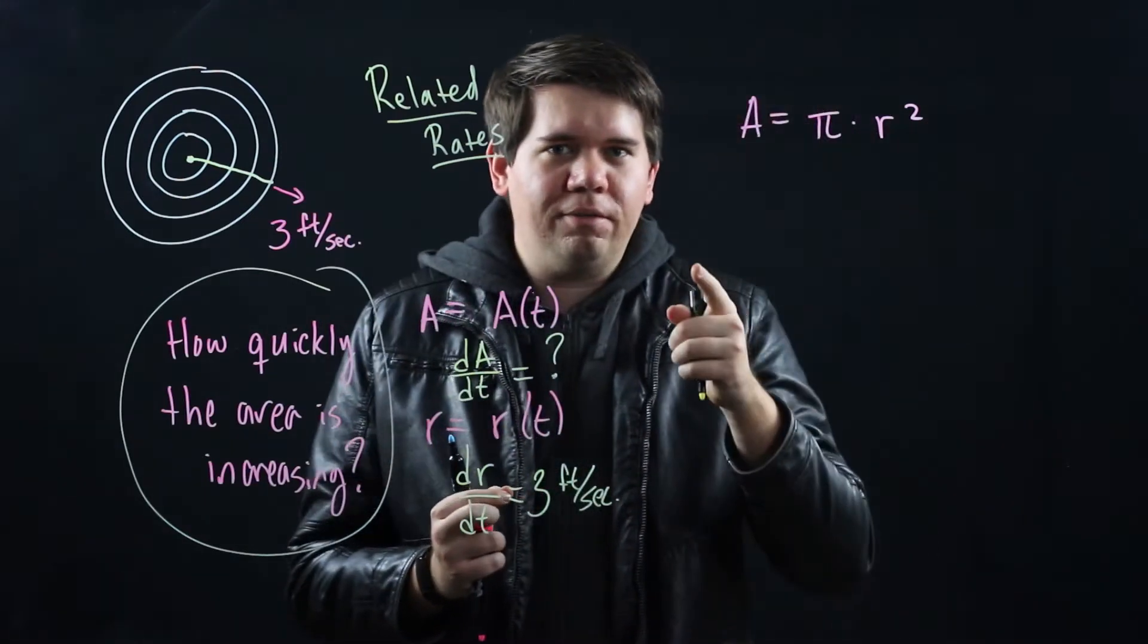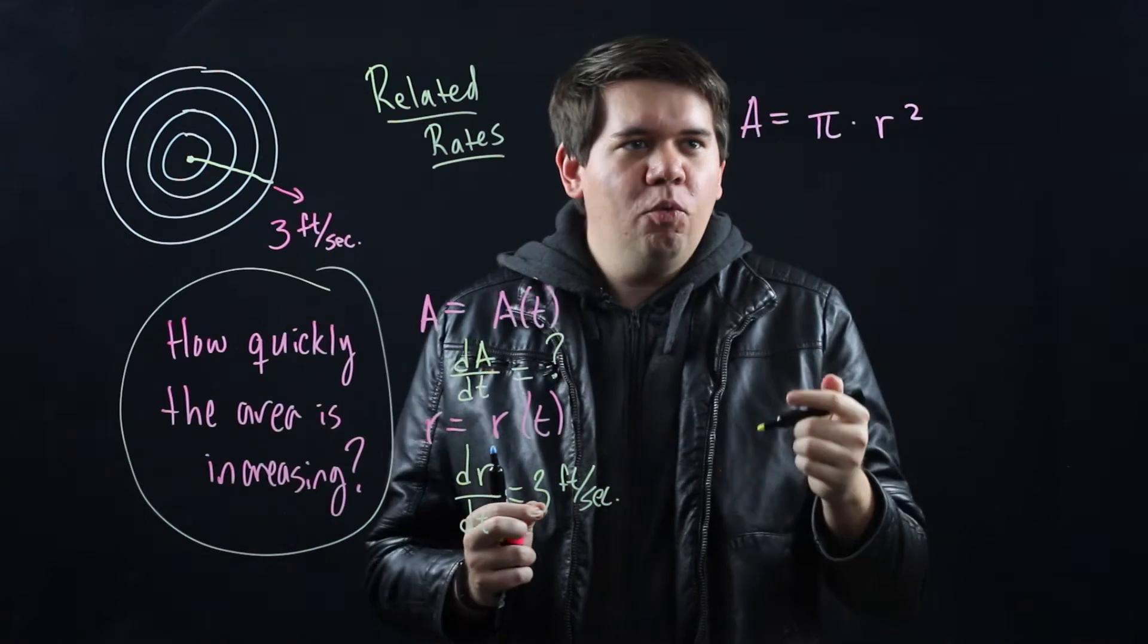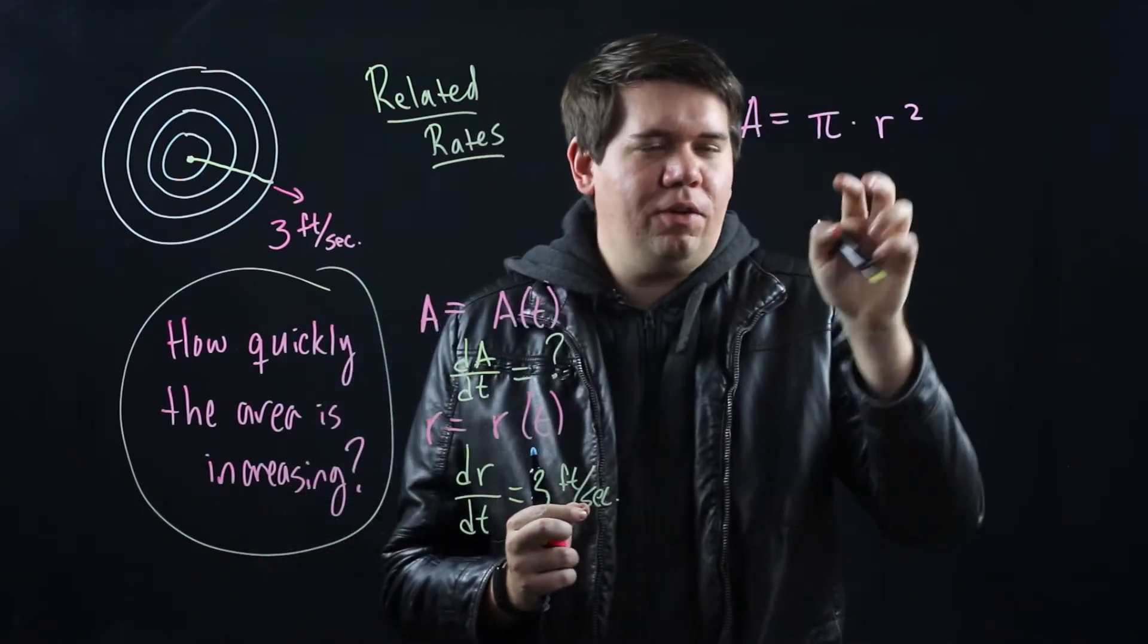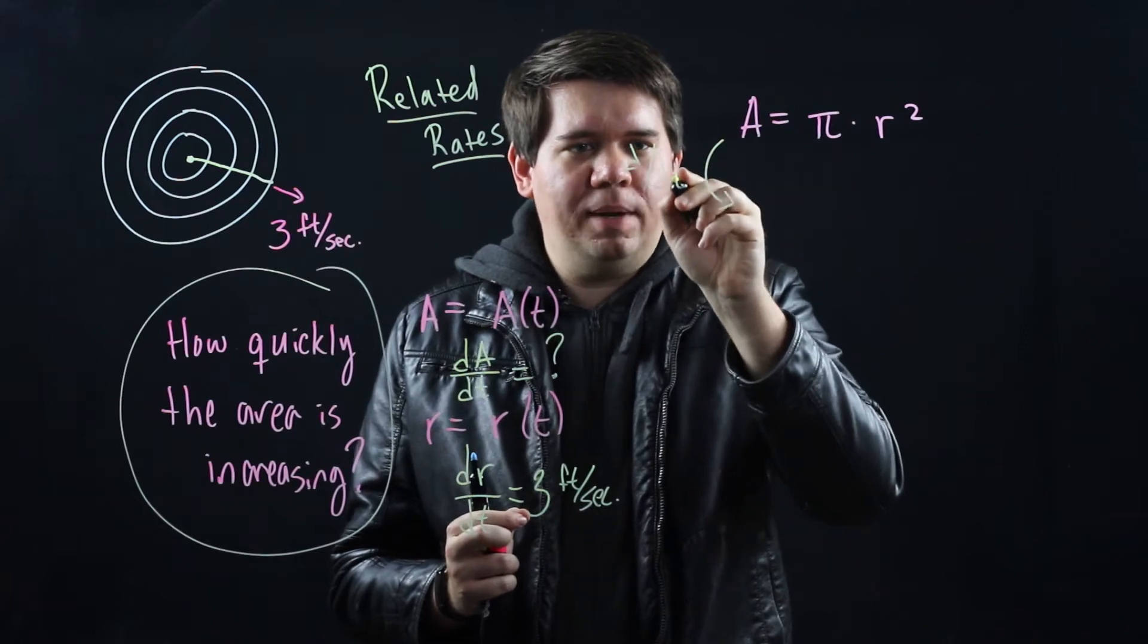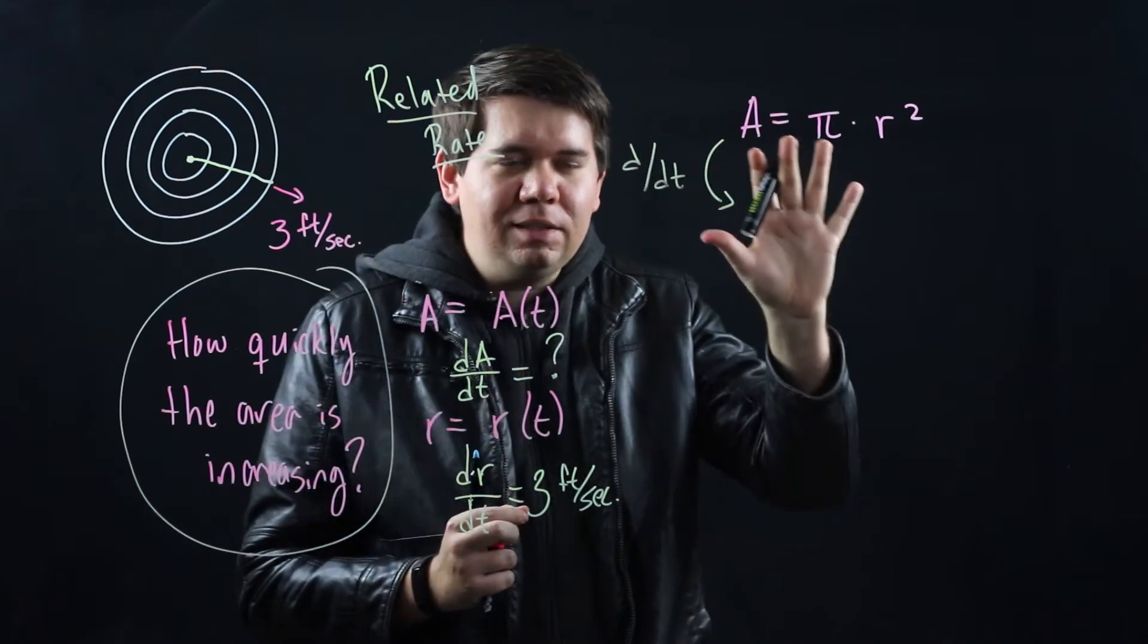To do that we should take the derivative. How do we take the derivative? Well we're going to think that these are both functions of time, and so what I'm going to do to this is I'm going to take the derivative of the whole thing with respect to t. This is implicit differentiation.